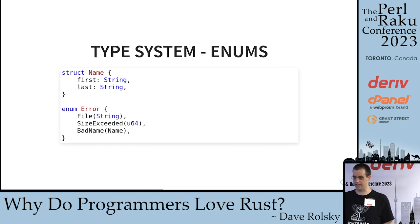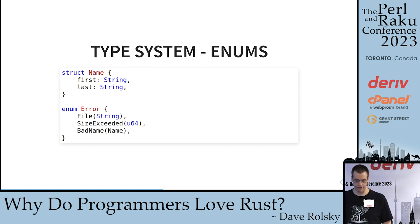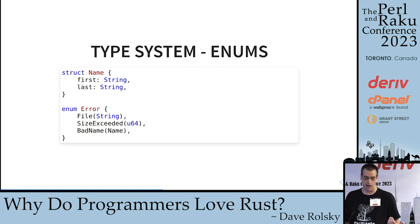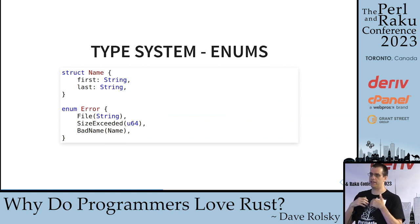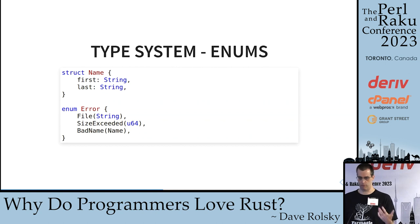Enums can also carry data. In this case, we have an error enum. We have a FileError which has a string inside — that string might be the file name. SizeExceeded, maybe containing the size that was too big. And BadName, which contains a name struct that is the name we thought was bad. This is really cool and powerful.